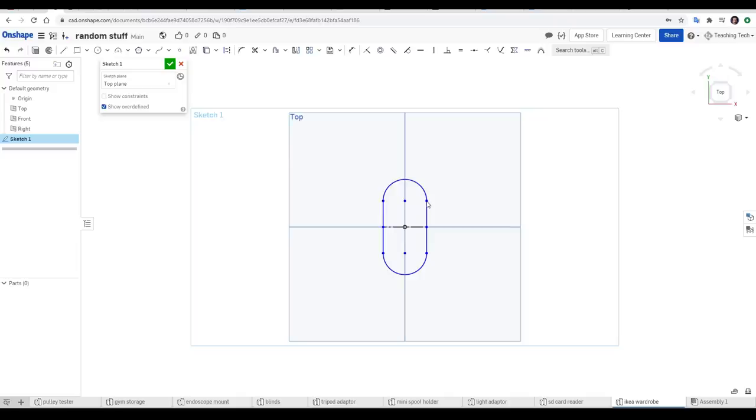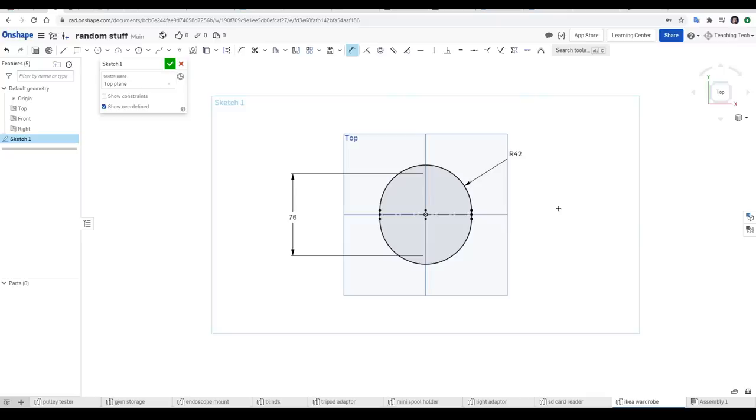Now that I have a shape in the correct proportion, I can start to use the dimension tool to get everything accurate. This is where I'll be using my calipers on the real life object, entering the values. If something goes wrong like you're about to see here, it means double checking. In this case, I entered a diameter instead of a radius.